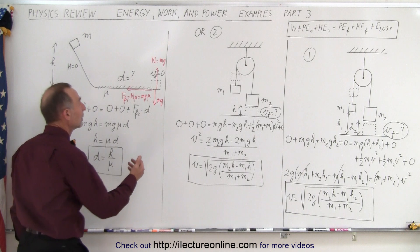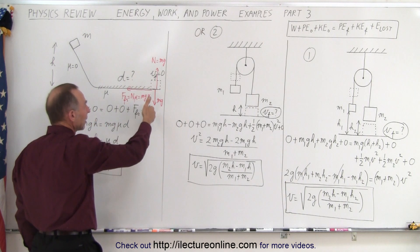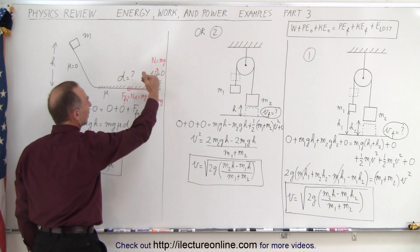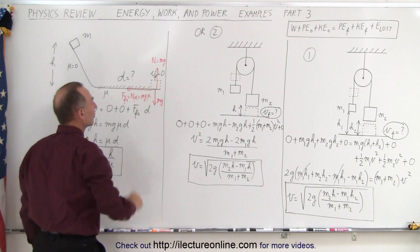We realize now that we're going to have energy lost due to friction. Notice we have the weight mg pulling down, we have the normal force pushing back up, and the friction force which is the normal force times mu, which is mg times mu.